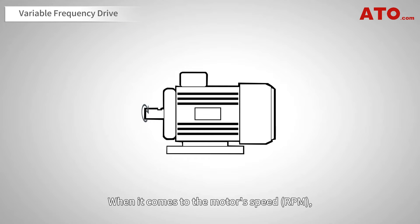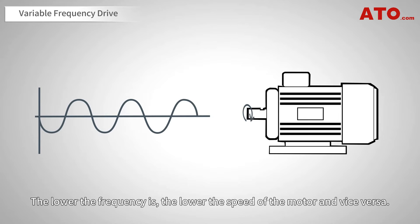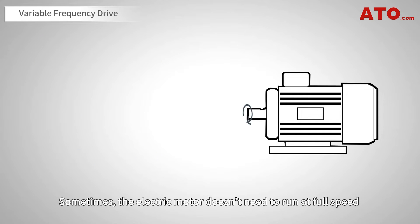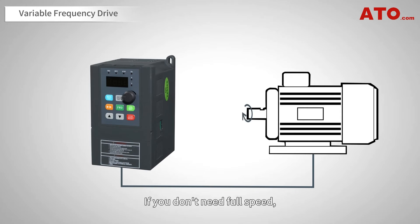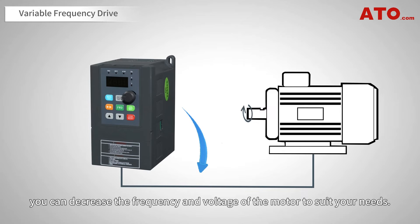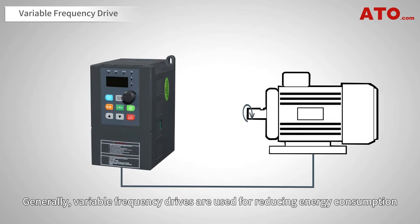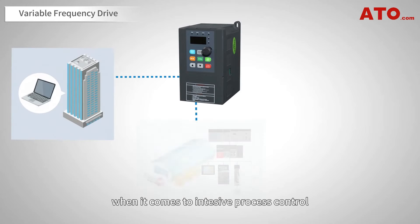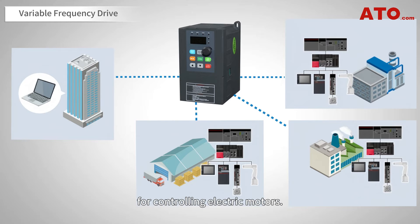When it comes to motor speed (RPM), a directly related variable is frequency — the lower the frequency, the lower the speed of the motor, and vice versa. Sometimes the electric motor doesn't need to run at full speed, and a VFD can come in handy since it allows you to manipulate the frequency and voltage. If you don't need full speed, you can decrease the frequency and voltage to suit your needs. This will also save the electric motor from potential malfunction and extend its life. Generally, variable frequency drives are used for reducing energy consumption and energy costs, and have proved very useful in intensive process control — from small appliances to large electronic systems.